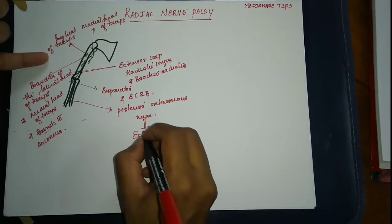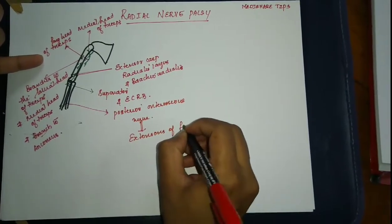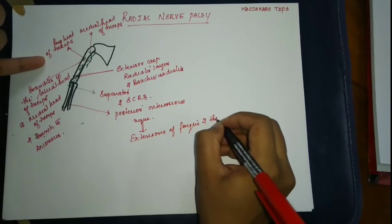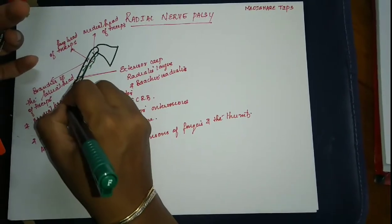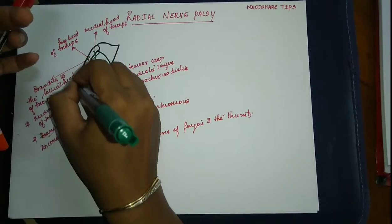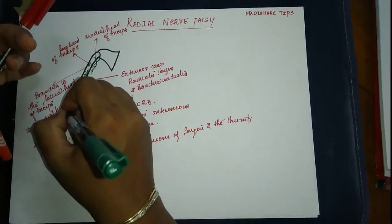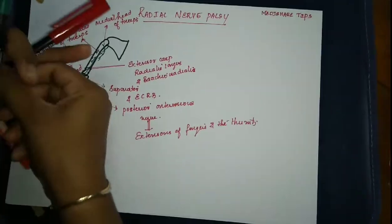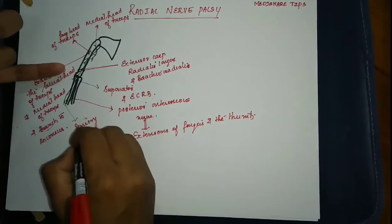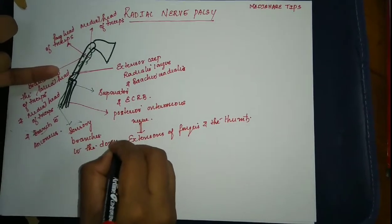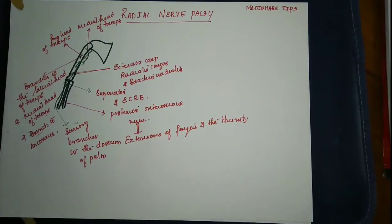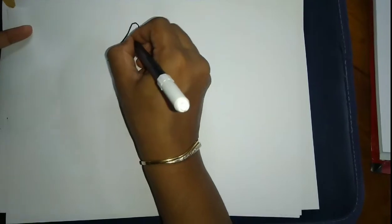The posterior interosseous nerve supplies the extensors of the fingers and the thumb. The radial nerve also gives off sensory branches. After giving out the posterior interosseous nerve, the superficial radial nerve continues and supplies sensory branches from the forearm and hand.